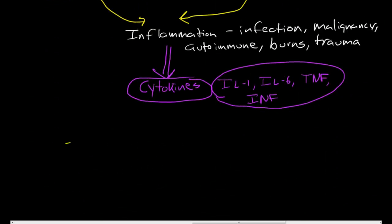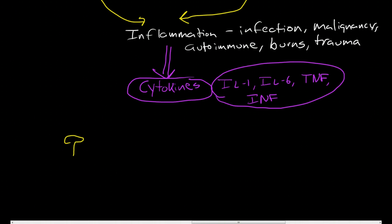Now, these cytokines have three effects. The first is on the bone marrow and it causes bone marrow suppression. Actually, it's really just bone marrow erythroid suppression.